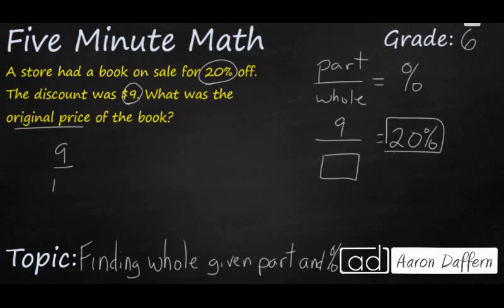9 over our missing number is the same as 20 over 100 because 20 over 100 is the same as 2 tenths, which is the same as 20%. So now we have a few different options that we can look at.